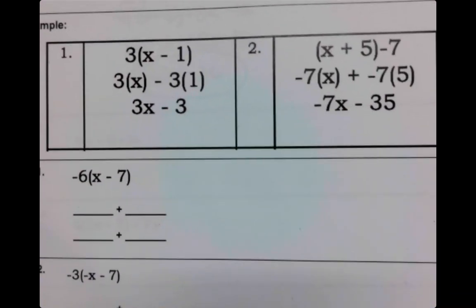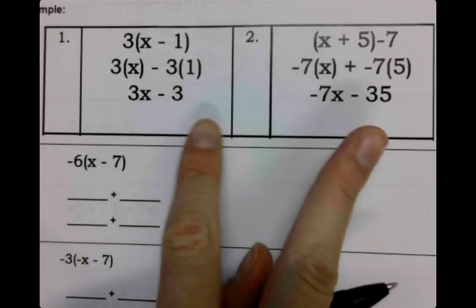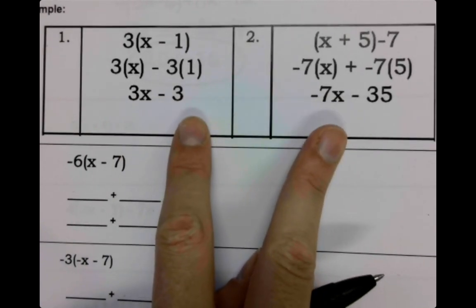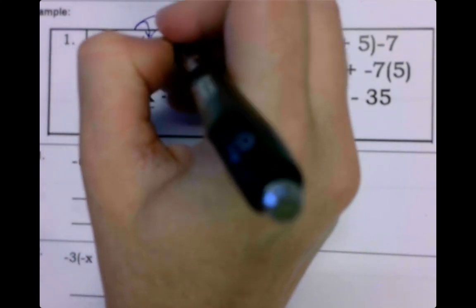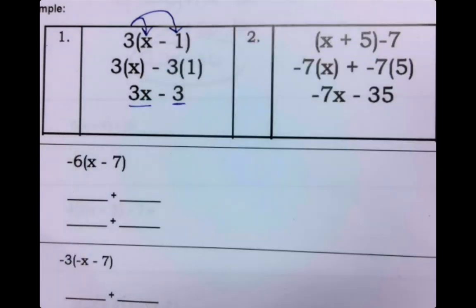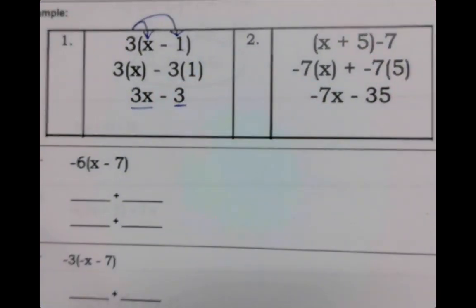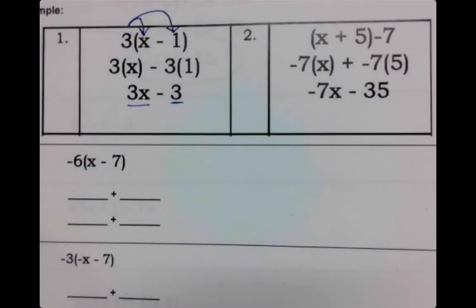So the second part of today is that distributive property that we worked on. Up here you have two examples and we've done this just like this. Some of us are perfectly content to just say 3 times x is 3x, 3 times 1 is 3, put that minus sign down here. Some of us need this second piece right here. So I think it's one of those things where you need to do what you need to do.